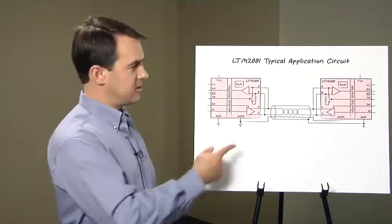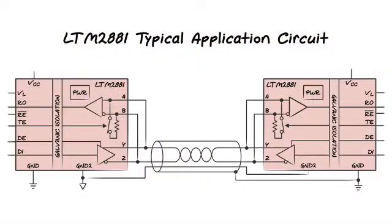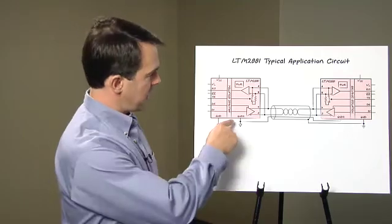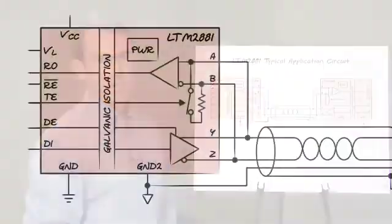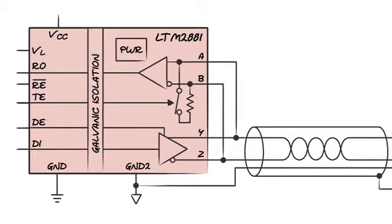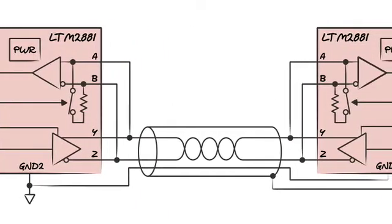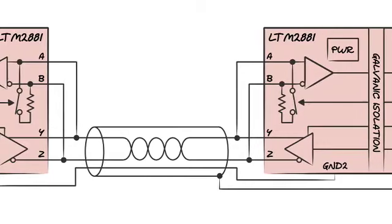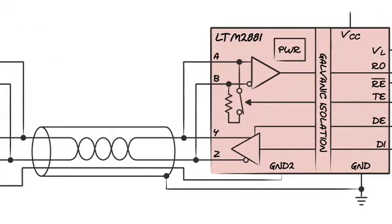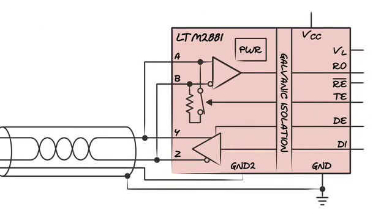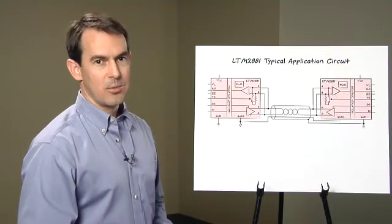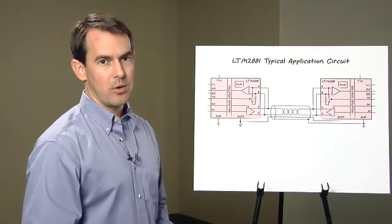Finally, here's the simplified LTM 2881 application circuit. One important consideration is proper wiring of isolated transceiver networks. Each isolated transceiver common, ground 2 shown here on each unit, should be connected to a common wire or the cable shield. This forces common mode voltage and noise to be absorbed and rejected by the isolation barrier instead of appearing directly across the RS-485 receiver inputs.